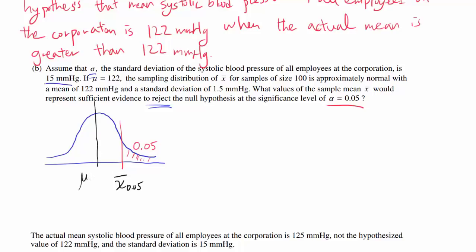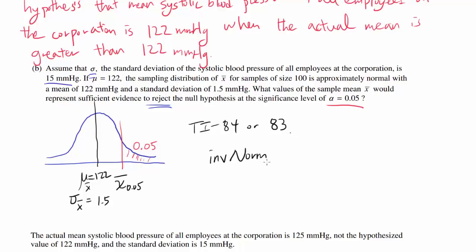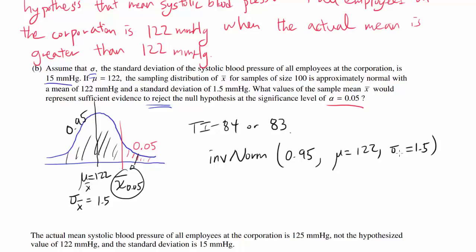We know the mean is 122 and the standard deviation of the sample means is 1.5. There are many ways to do this — using a Z-table or a calculator. It's much easier with a TI-84 or TI-83. You can use the inverse normal function, which goes from probability to value. Plug in an area to the left of 0.95, a mean of 122, and a standard deviation of 1.5. We're looking at the distribution of sample means. When you evaluate this, you get a value of 124.467.